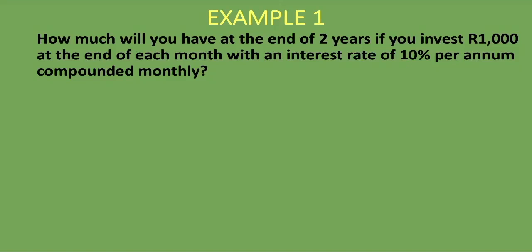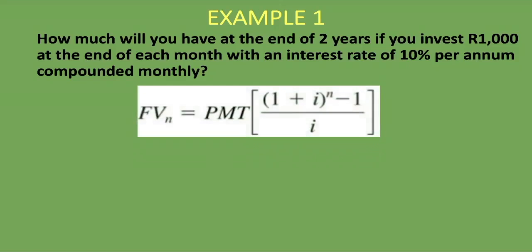That is where nominal interest rate and effective interest rate comes into play, and we've done lessons on those before — you'll find the links in the description below. So let's do this example. The PMT is R1,000, the payment made at the end of each month. Then you open the big brackets and calculate 1 plus i. Since it's compounded monthly, our i is 0.10 divided by 12.